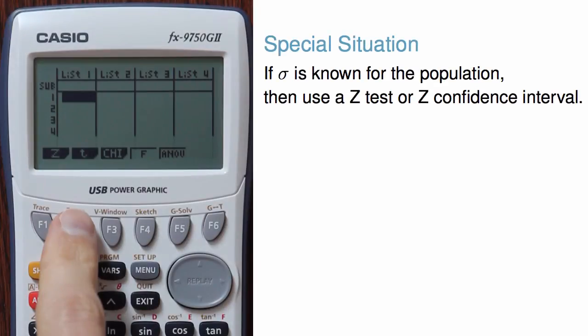One last quick note. In the rare case where the standard deviation for the population is known and not estimated using our sample, that is, if I know sigma, the population standard deviation, then I would choose a Z confidence interval or a Z test instead of a T confidence interval or a T test.